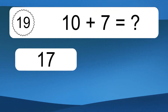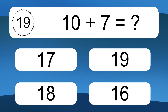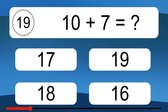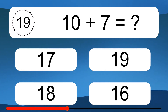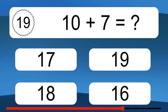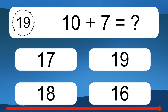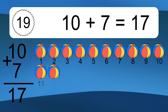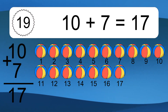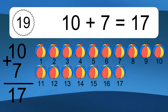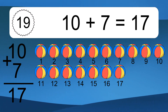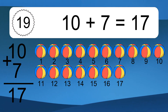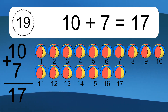10 plus 7 equals what? 10 plus 7 equals 17. Let's count it. 1, 2, 3, 4, 5, 6, 7, 8, 9, 10, 11, 12, 13, 14, 15, 16, 17.